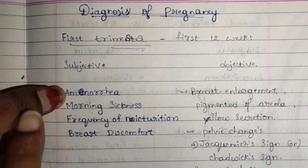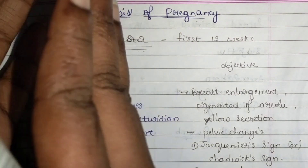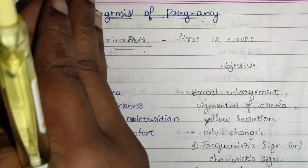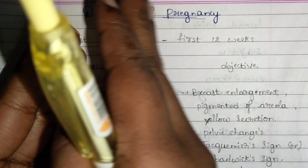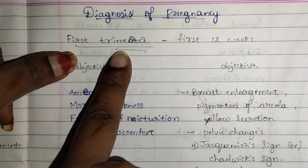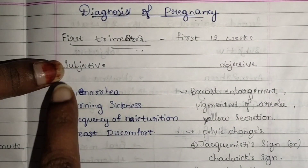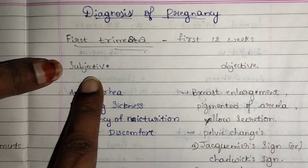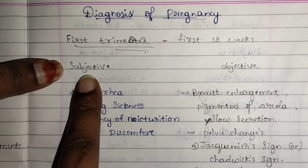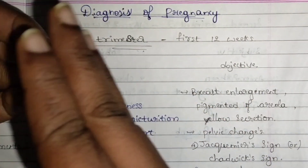The first trimester is from conception till the twelfth week — that is the first three months. Here, subjective data is what the patient says, and objective data is what the signs tell us.